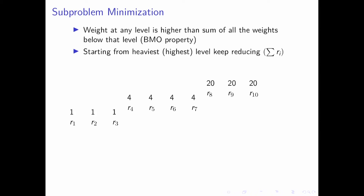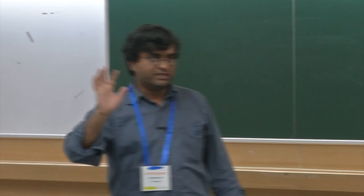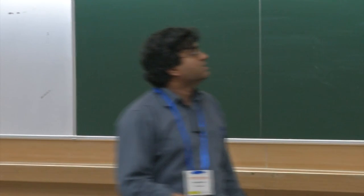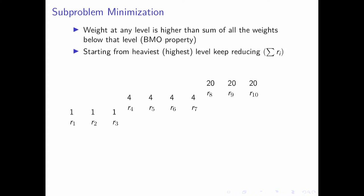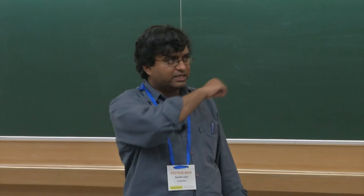The second strategy uses the Boolean Multi-level Optimization (BMO) property: at each level, a single weight is strictly greater than all weights combined at every level below. For example, this holds for weights 16 and 3, 1, 9. If the formula has this property, we start from the highest level and impose a cardinality constraint — always polynomial since weights at each level are equal. We ask whether only two of them can be set to true; if satisfiable, we reduce further.